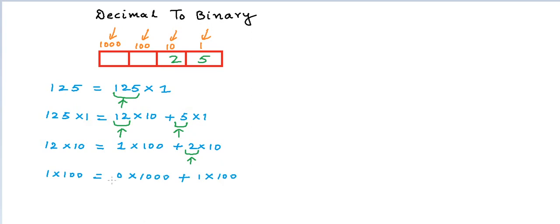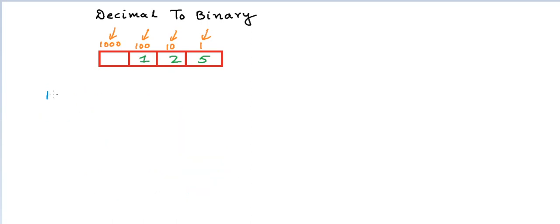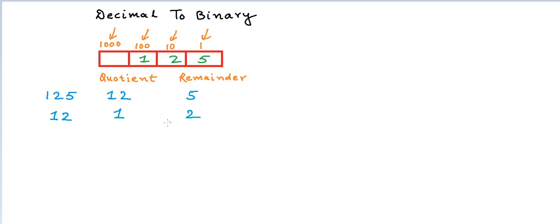So, this goes here. Now, we cannot take 1000 out of this 100, so all of this 100 actually goes to the 100's column. So, if I have the number 125 and I divide it by 10, I get 12 as quotient which gives me the number of 10's, and 5 as remainder that gives me the remaining ones. And if I pick up those 12 10's, then again division by 10 gives us 1 as quotient which is the number of 100's, and 2 as remainder which is the number of remaining 10's.